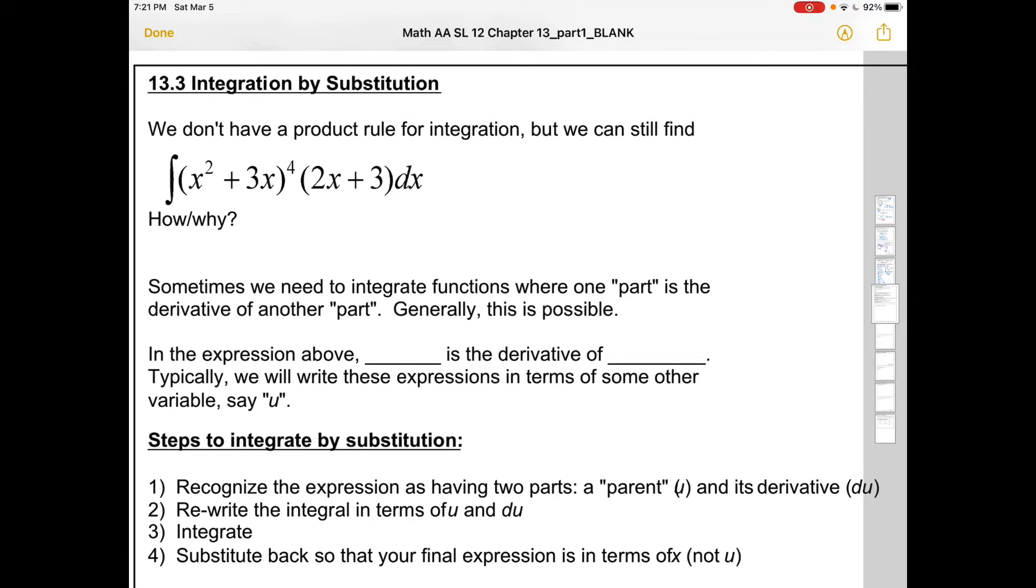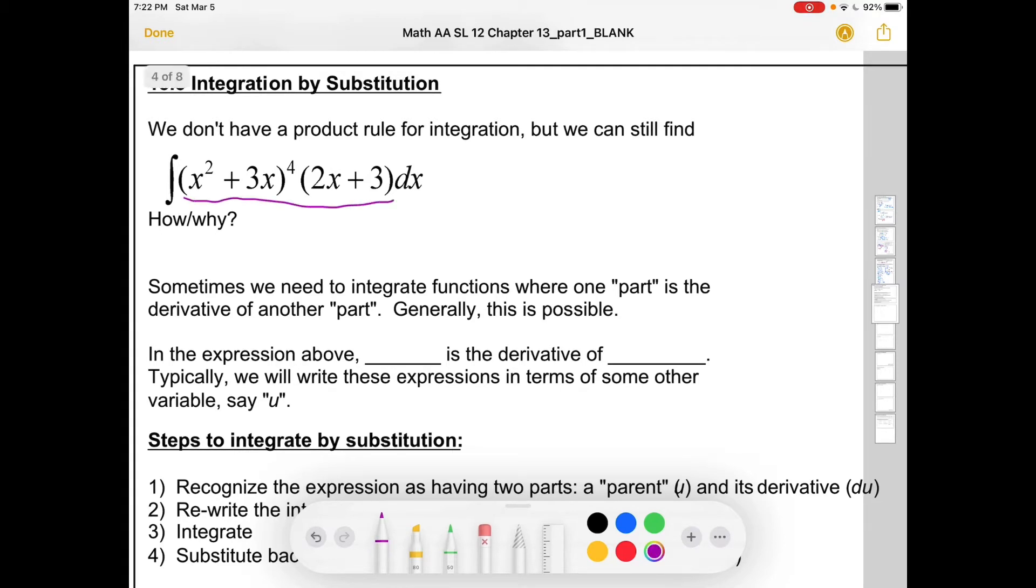We're going to start off by looking at a pretty rough looking integral here, where we find the integral of (x² + 3x)⁴ times (2x + 3). We don't have a product rule for integration at this point, and we don't really have a chain rule, but somehow we can still integrate this. People with good insight will often just come up with a guess at what it is and have it be right.